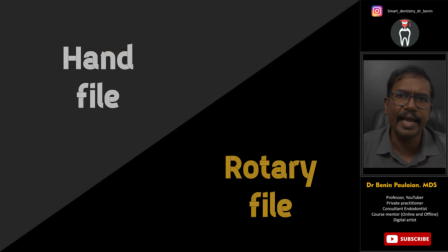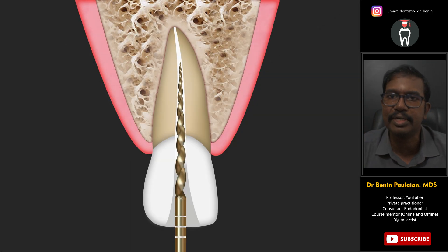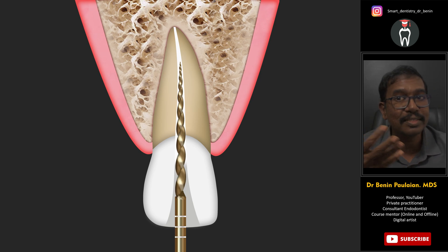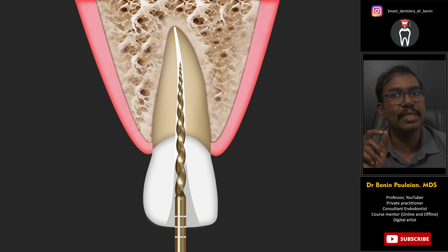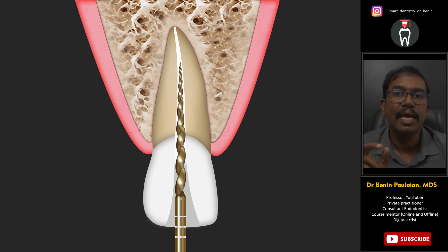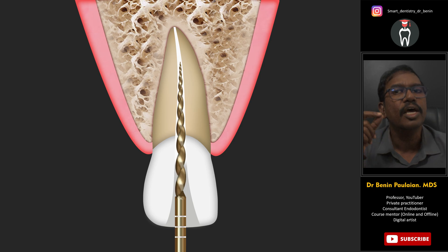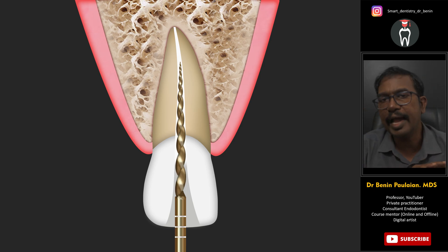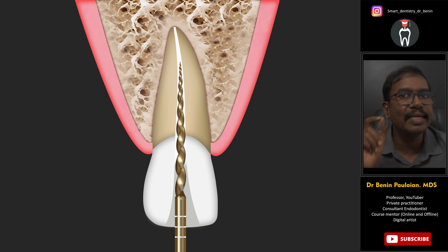Does this apply only to a hand file? No, it applies to rotary files also. All rotary files will be rotating inside the canal — so how do they avoid binding? In order to avoid this bounding, all rotary files have a tip which is safe — meaning a non-cutting tip. Hand files have a cutting tip and rotary files have a non-cutting tip, so that it will follow a pathway created by the hand file and will not get binded at the tip.